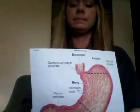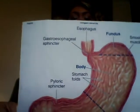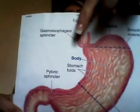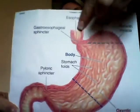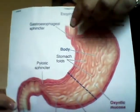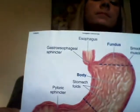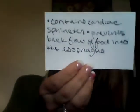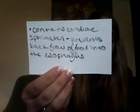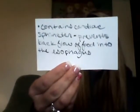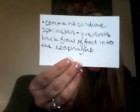Moving on to the stomach of a monogastric animal. In the monogastric stomach, we have a cardia, which is this area between the fundus and body of the stomach and the esophagus. This cardia contains a cardiac sphincter that prevents backflow of food into the esophagus.